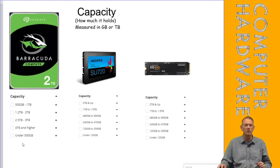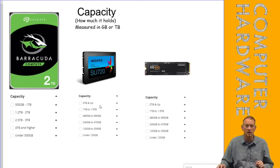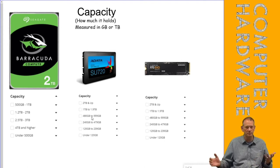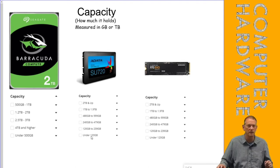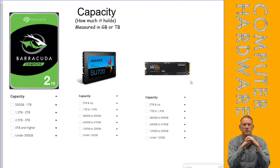The smaller capacity category is under 500 gigabytes, because there aren't a lot of those by comparison. Both solid state capacity categories are broken down the same way: 2 TB and up, 1 to 2 TB, 480–500 GB to 1 TB, 240–480 GB, 120–240 GB, and under 120 GB. The breakdown is essentially the same for the M.2 drive category as well.